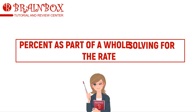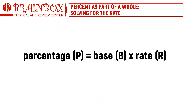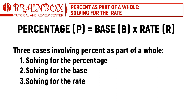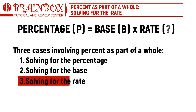For the discussion we will be using the general equation: Percentage P is equal to Base B times Rate R. Because of this equation, there can be three possible scenarios or cases depending on what is being asked. The first is when Percentage P is missing, the second is when Base B is missing, and the third and last is when the Rate is missing. In this episode we will only be discussing the third case.